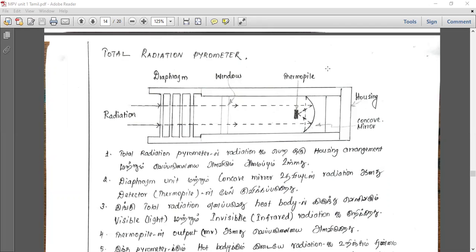The optical pyrometer and photoelectric pyrometer measure visible light radiations only. They measure light intensity to determine temperature. Total radiation pyrometer measures both light intensity and infrared intensity.